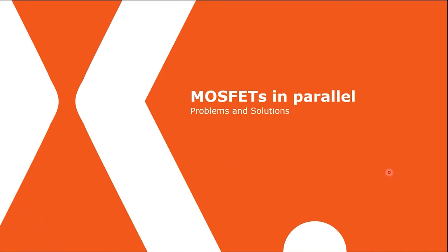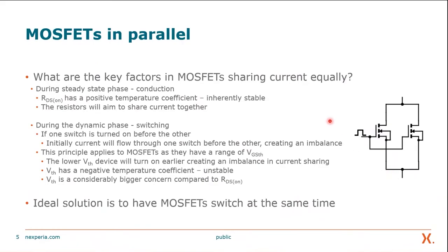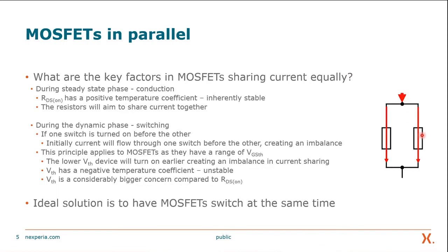So with that in mind, let's go over the problems and the solutions of actually paralleling MOSFETs. What are the key factors for MOSFETs to share current equally? On the right we have two MOSFETs in parallel and we're switching them on and off. During the steady state or conduction phase, these MOSFETs are essentially on and RDS_on is the main component. We can simplify this into two resistors, and these two resistors will aim to share current equally. RDS_on has a positive temperature coefficient, which means as temperature increases, RDS_on increases. If RDS_on increases on one device, less current will flow through it and it will cool itself down — so it's inherently stable. However, the story changes quite a bit in the dynamic phase of switching.